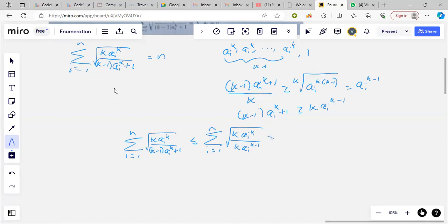And this is equal to sigma i going from 1 to n, root of a i, and we get that this is equal to n. So sigma i going from 1 to n, root of a i, is at least n.